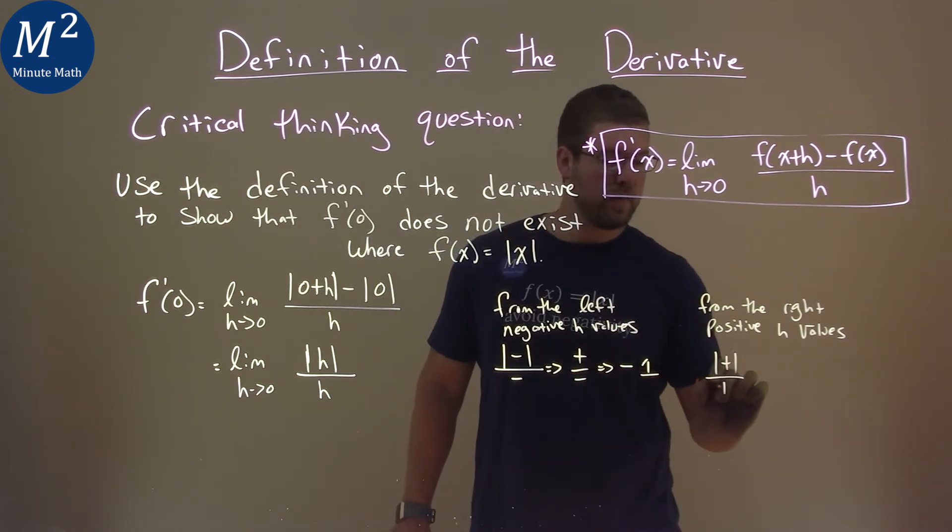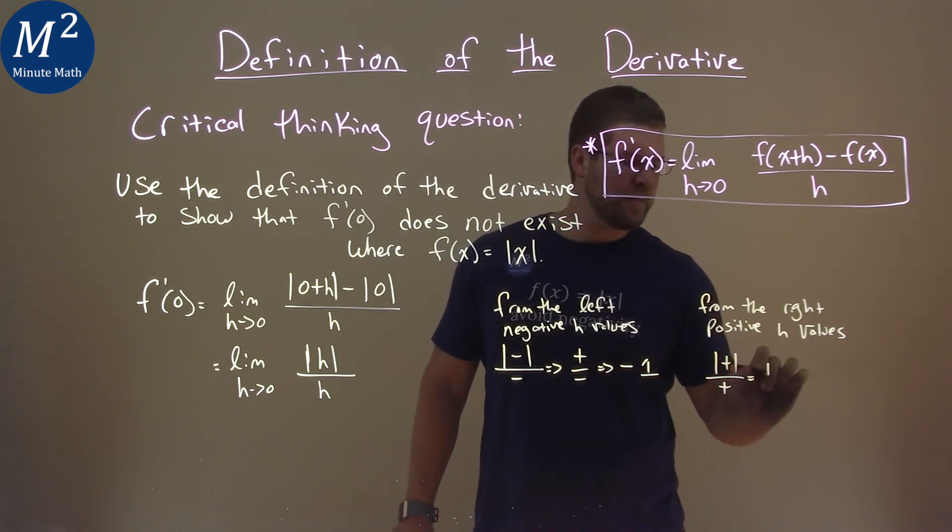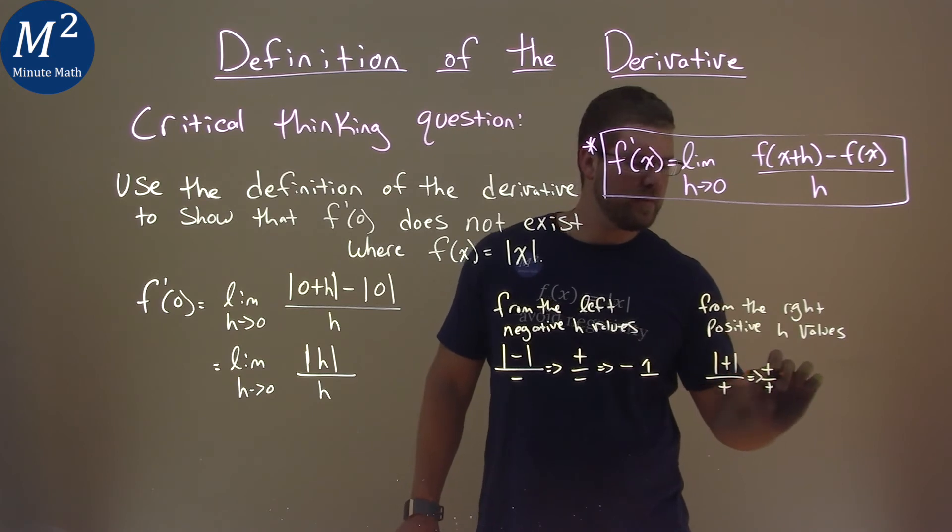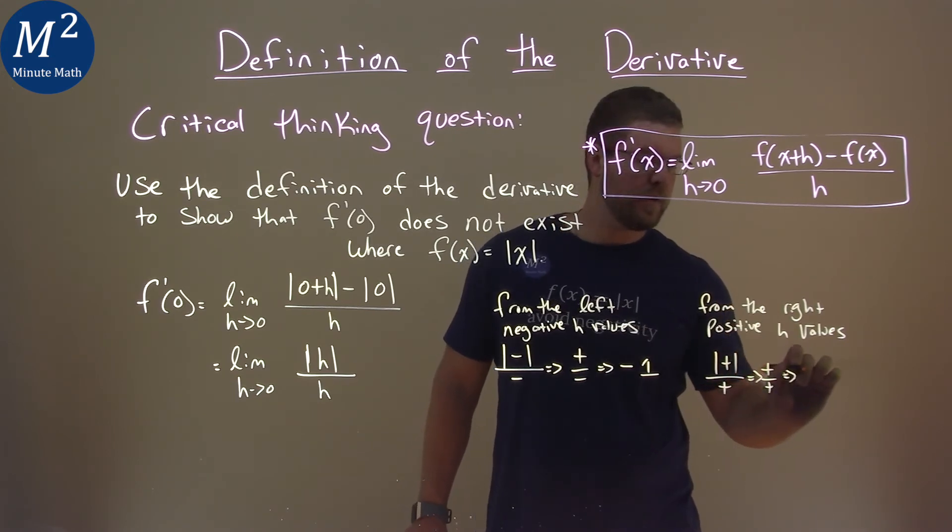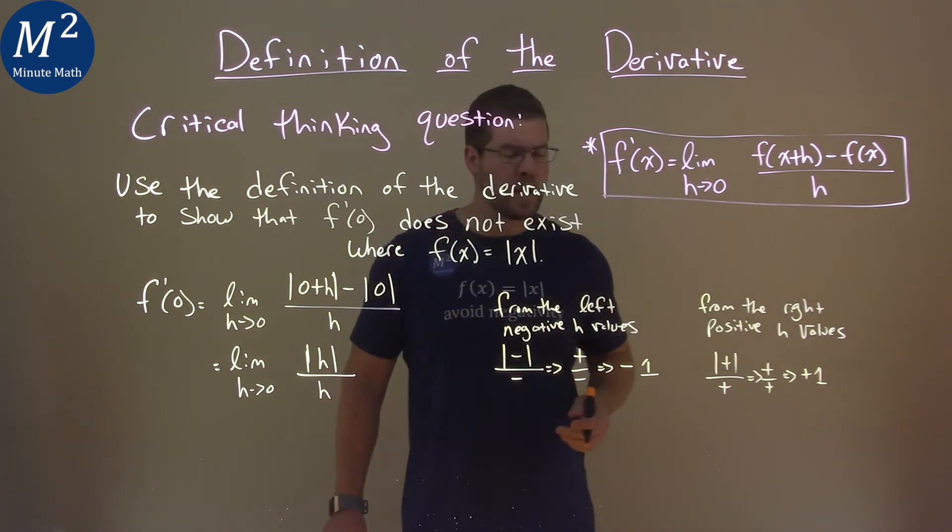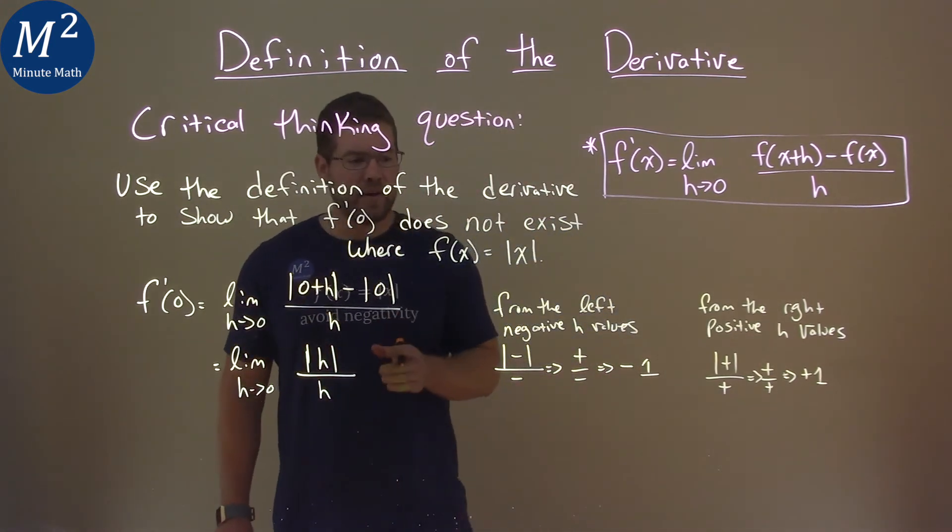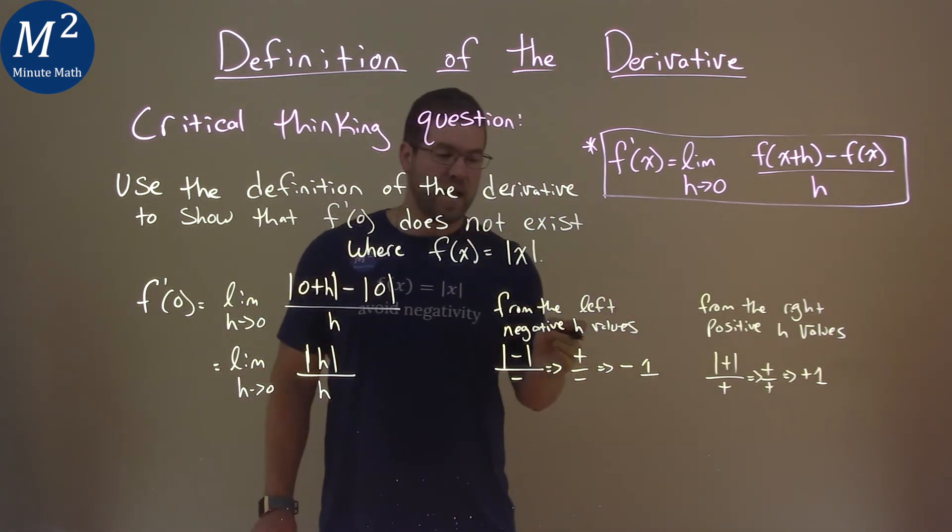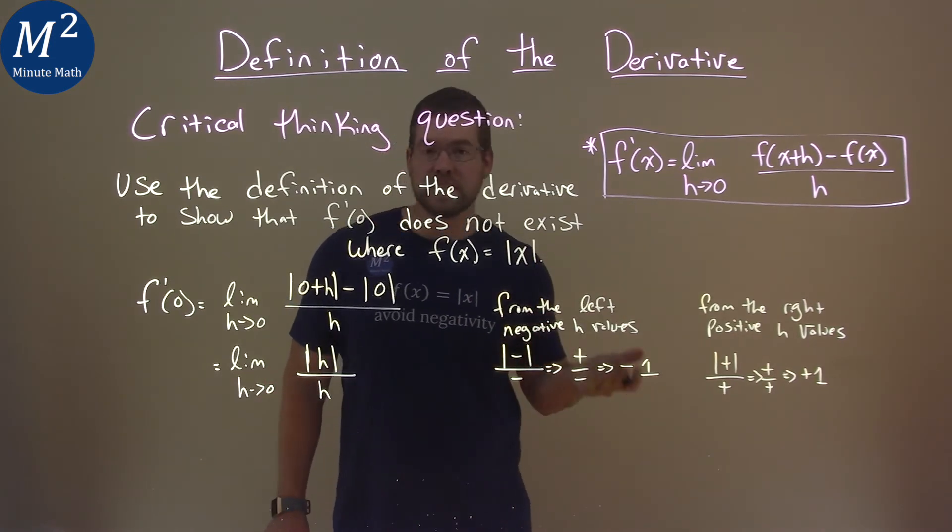we have a positive absolute value over a positive, which is just a positive over a positive, which is equal to a positive one because it's over itself.